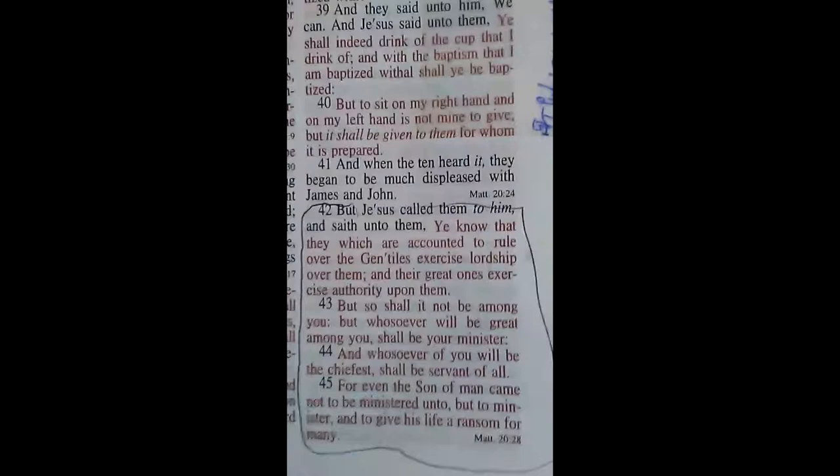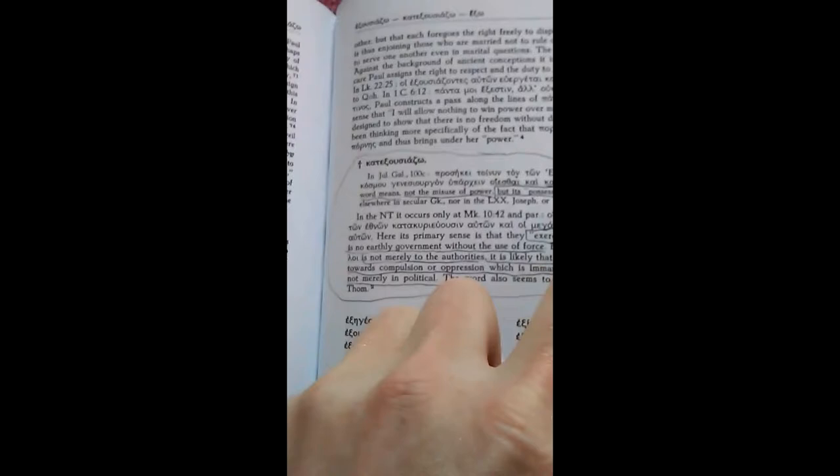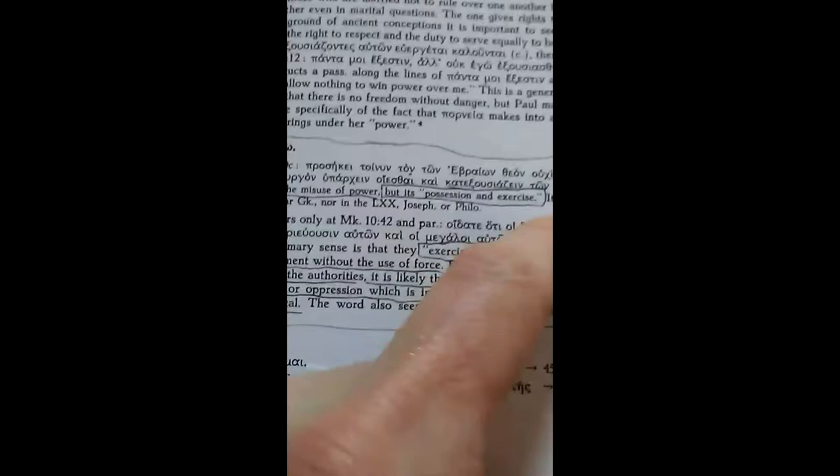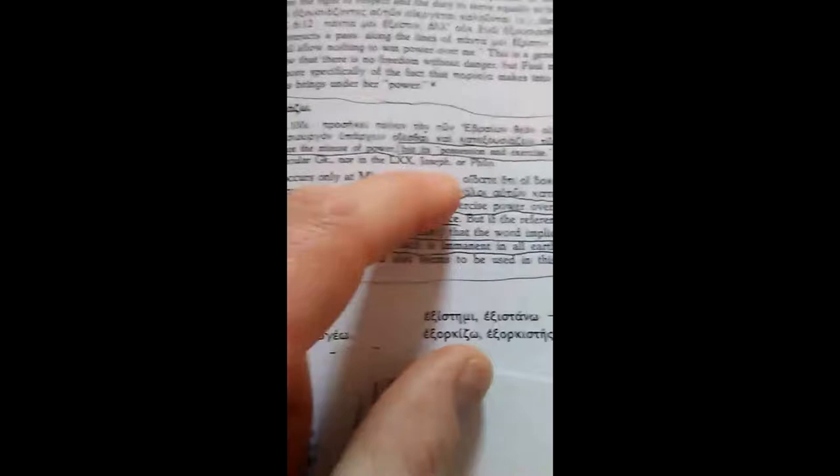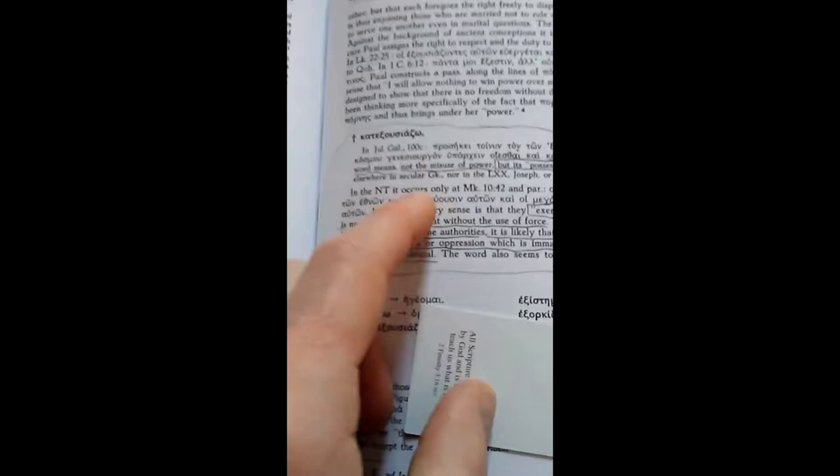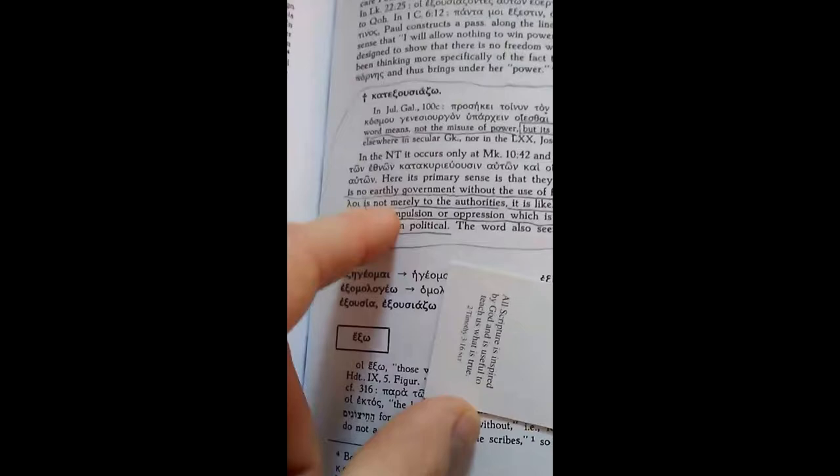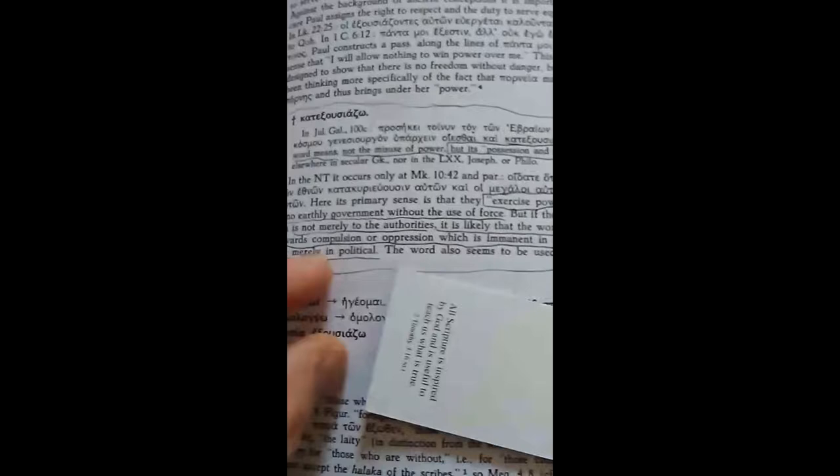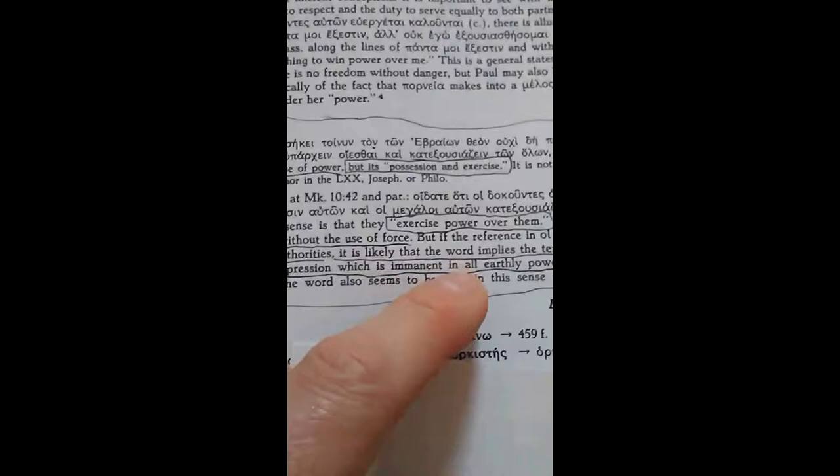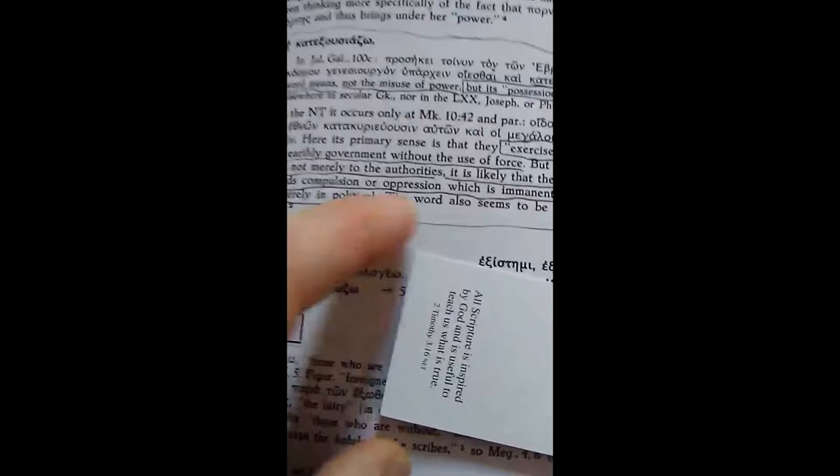So he said that we're not going to do this. We're not going to do this. And it's like, wait a second. Isn't that what all these churches do? Yeah, that is what they all do, but we're not going to do that. So right here it says, this word means not the misuse of power, but its possession and exercise. So no power at all. It is not found elsewhere in secular Greek, nor in the Septuagint, Josephus or Philo. So in the New Testament, it occurs only at Mark 10:42. Here, its primary sense is that they exercise power over them. There is no earthly government without the use of force.